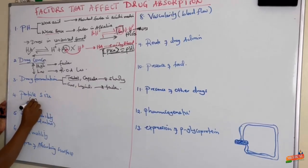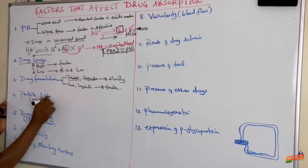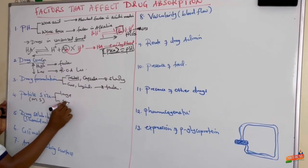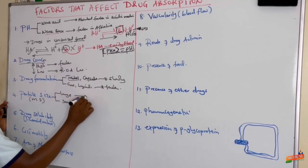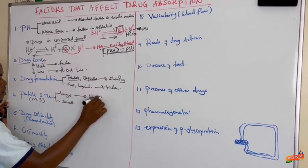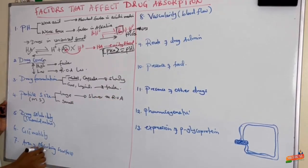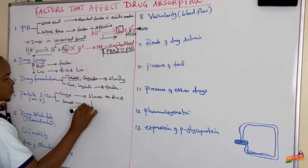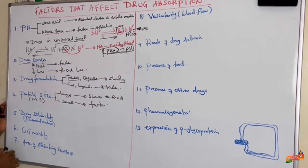The next factor is particle size, also called molecular size. When the molecular size of the drug is large, the slower the rate of absorption. And when the drug is small in size, it is absorbed faster.